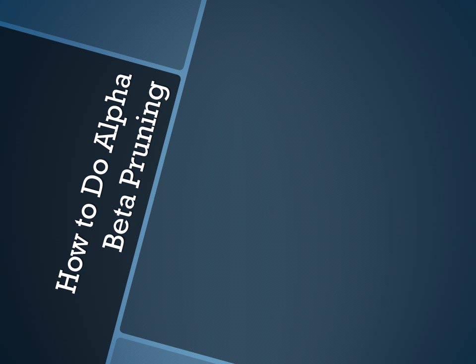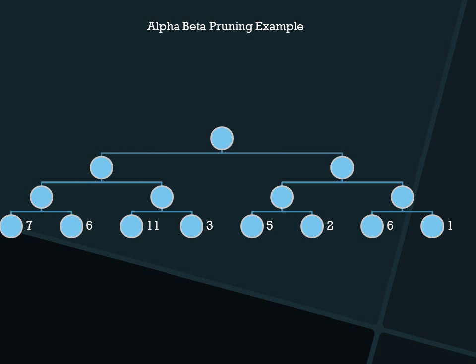Let's walk through an example of how alpha-beta pruning works. Suppose we have the same tree from the minimax example. With your move, you look at the first two options — 7 and 6 — and you pick 7. You move that up to the next level, and theoretically, the opponent picks 7 as their minimum. Then you look down and see 11, which is the next possible opponent move. You would maximize with 11, but the opponent would always pick 7, so there is no need to look at any more nodes in that area. So you can prune out 3.